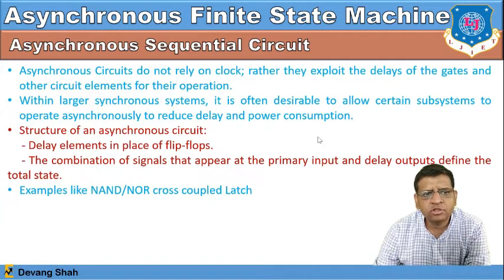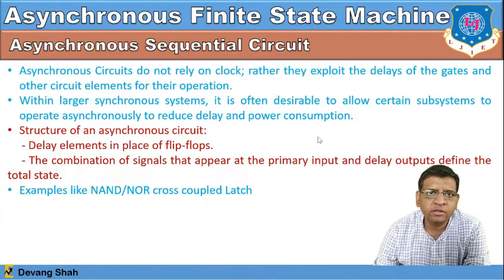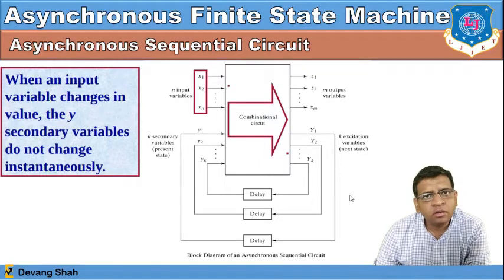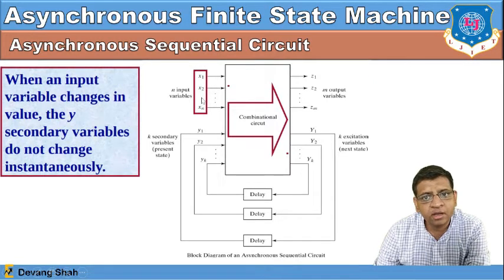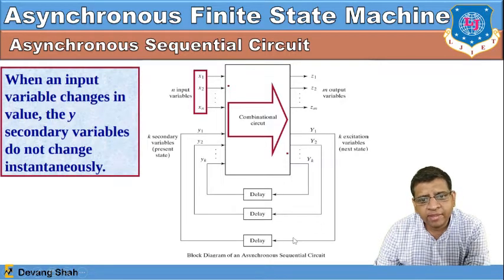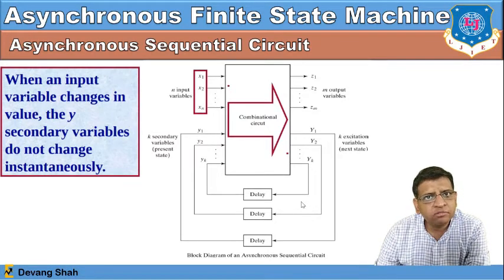The structure of asynchronous circuits uses delay elements in place of flip-flops. The combination of signals at the primary inputs and delay outputs define the total states. Examples include NAND and NOR cross-coupled latches. In the block diagram, there are inputs X1 to XN, outputs Z1 to ZM, and secondary variables Y1 to YK that are delayed and fed back to the inputs.